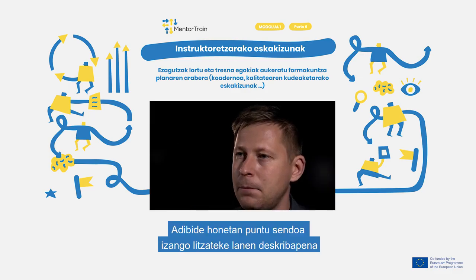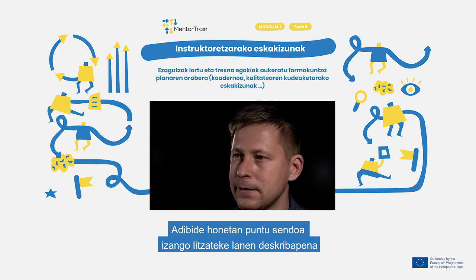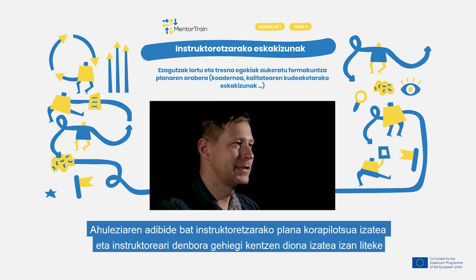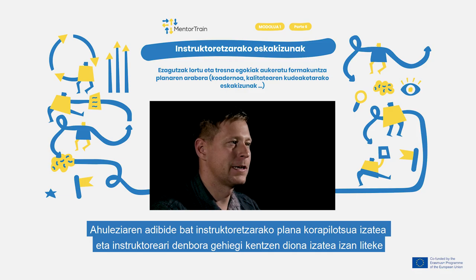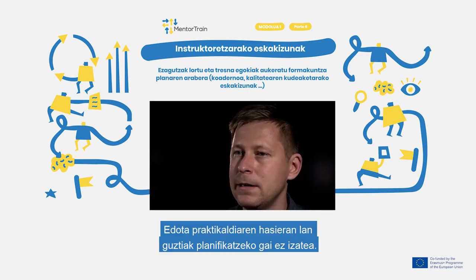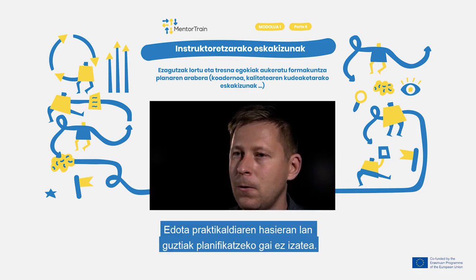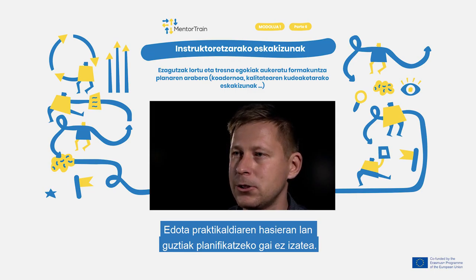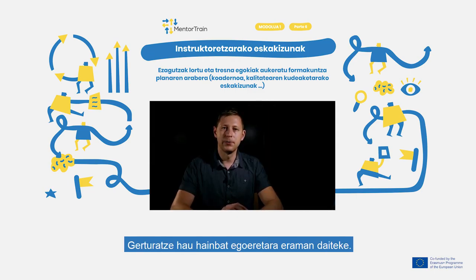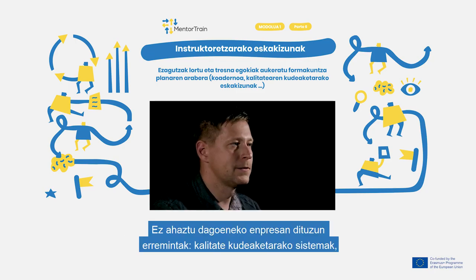In this example, a strength could be a detailed description of tasks. An example of a weakness could be that the mentoring plan is very complex and takes a lot of time for the mentor, or that it's not possible to plan all the tasks at the beginning of the apprenticeship. You can use this approach for different situations.